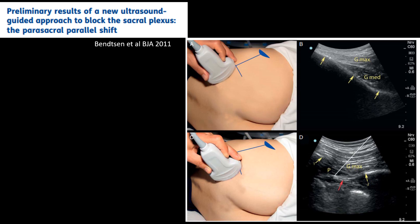Following Ben Ari's description, Benson et al. proposed a modification where the ultrasound probe was placed medial to the midpoint of the posterior superior iliac spine and the greater trochanter, moved from a superolateral to an inferomedial direction parallel to the sacrum — called the parasacral parallel shift. They provided a road map: the ilium initially appears as a hyperechoic contour, the break in the ilium defines the origin of the greater sciatic notch, and the sacral plexus was consistently identified medial to the ischial bone.